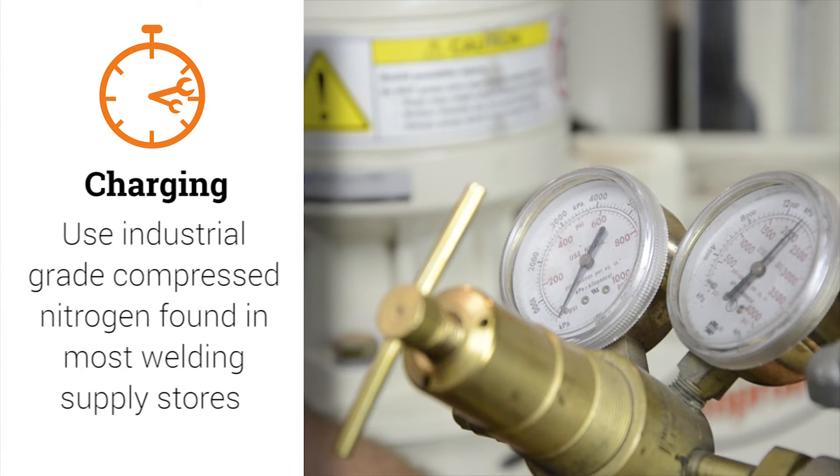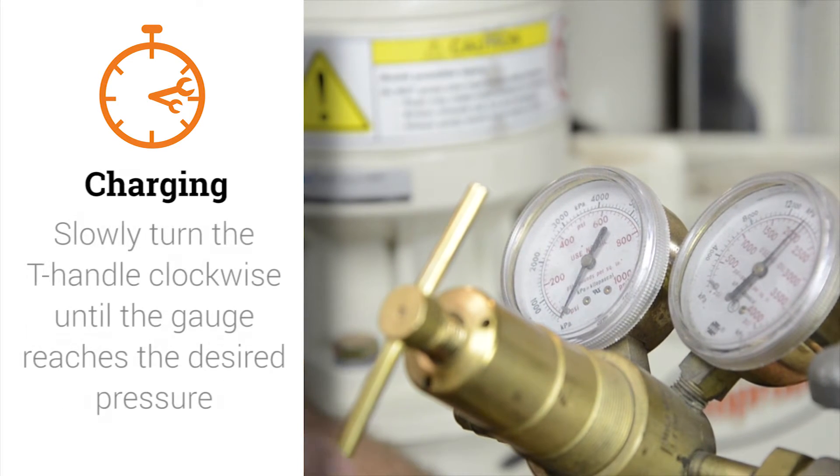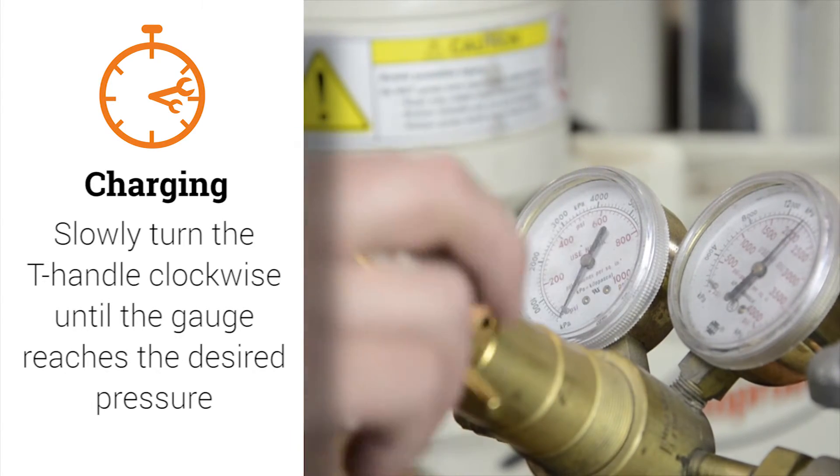We use industrial grade compressed nitrogen found in most welding supply stores. This is my line pressure gauge. To charge the hammer I am going to slowly turn the T-handle clockwise until my gauge reaches the desired pressure.